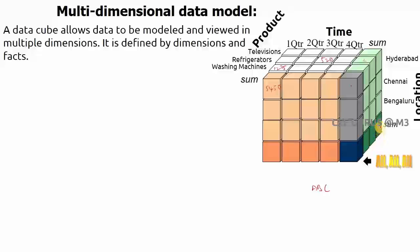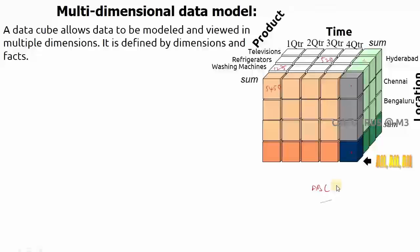We can also consider combinations across all locations and all quarters for specific products like televisions — that sub-cube represents total sales of all locations for all quarters with respect to televisions. Another part covers annual sales of all products in all locations. Based on the query or requirement, we can retrieve consolidated values from the data cube. The dimensions here are product, time, and location.